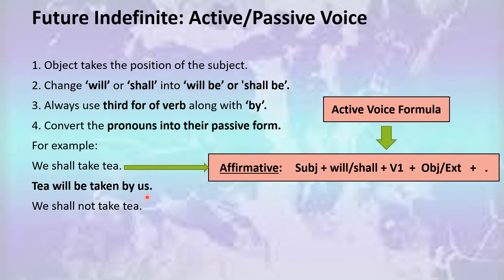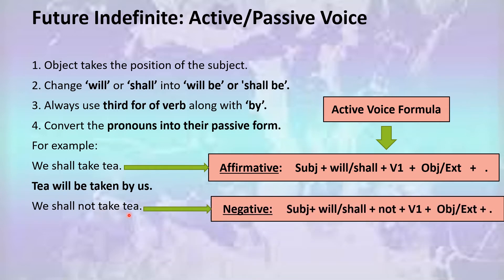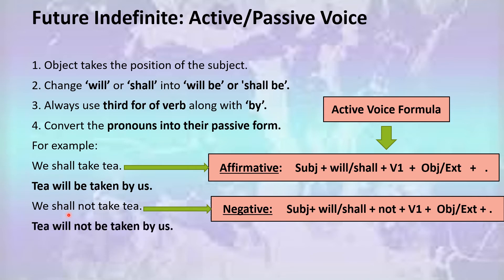Now this is the negative sentence of future indefinite tense: 'We shall not take T.' You already know that following this formula, the negative sentence of future indefinite tense has been written. First you should identify it, then you will be able to convert the sentence into its passive voice form. Your sentence would look like this: 'T will not be taken by us.'